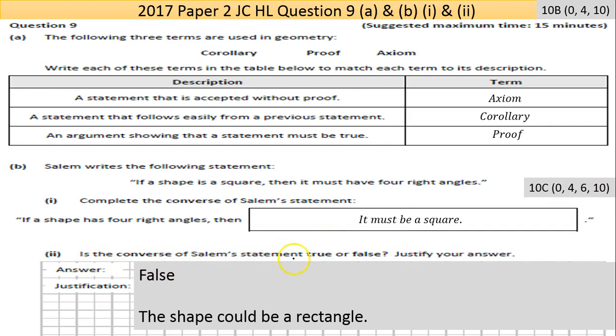What do you think? Justify your answer. Well, I'm saying it's false. The reason is a rectangle also has four right angles, so that's not a square. Okay, so that's Part B (ii).